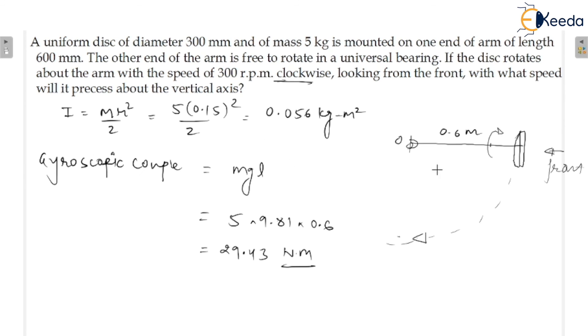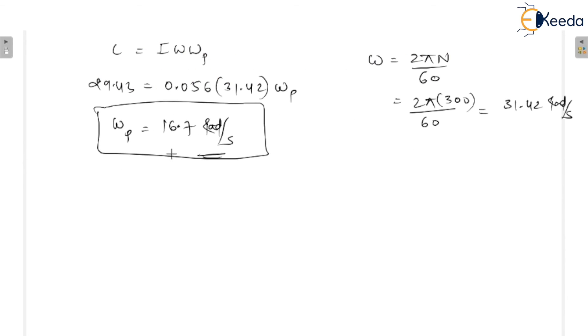So you can see here, there is a mass of the disc. Gyroscopic couple would be equal to MgL. And we know this is also equal to Iω·ωP. So from here, you can calculate the speed of precession about the vertical axis. Answer is 16.7. This would be the answer. I hope you will understand the solution of that question.